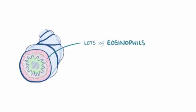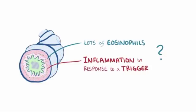Alright, but why do some people have lots of eosinophils and create inflammation in response to a trigger in the first place? Well, type 2 helper T cells, or TH2 cells, which is an immune cell subtype,